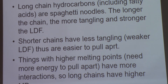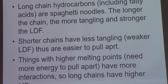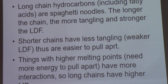To recap: longer-chain carbon molecules, including fatty acids, are like spaghetti noodles. The longer the chain, the more tangling and the stronger the London dispersion forces. Shorter chains have less tangling, weaker dispersion forces, and are easier to pull apart. Things with higher melting points need more energy to separate because they have more interactions.